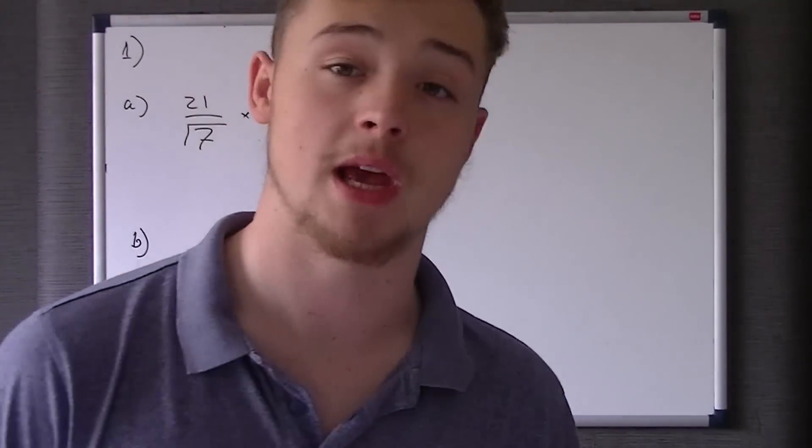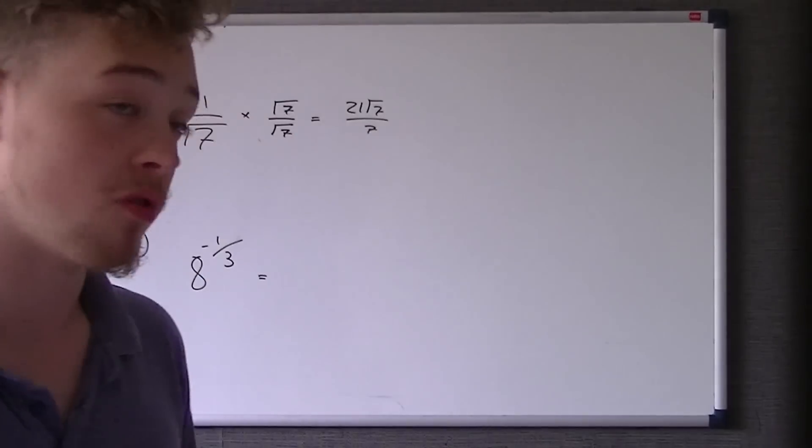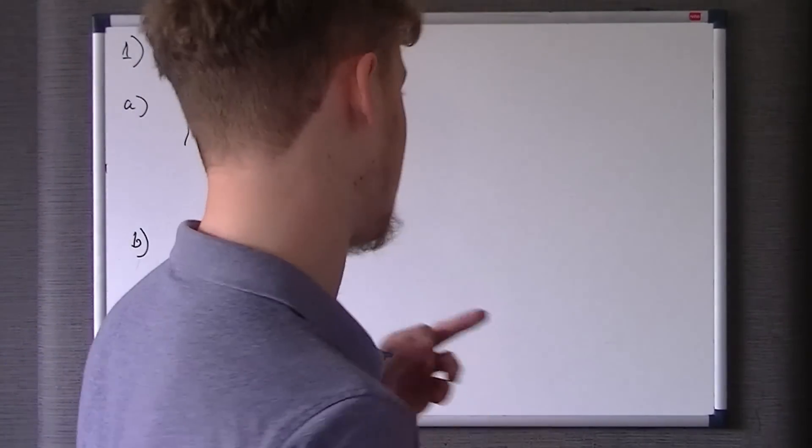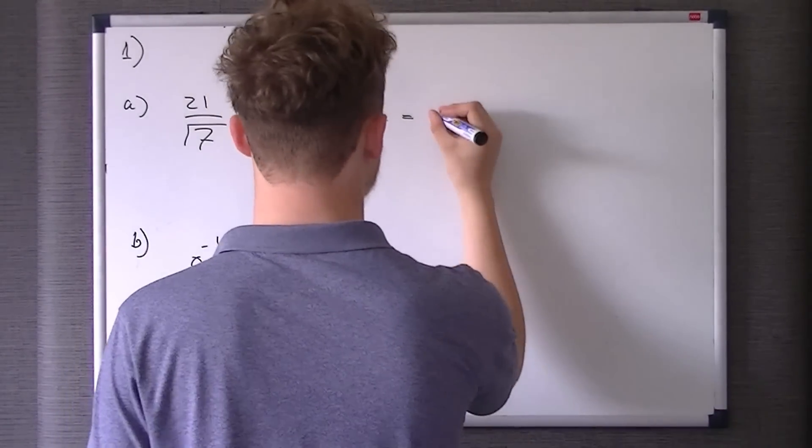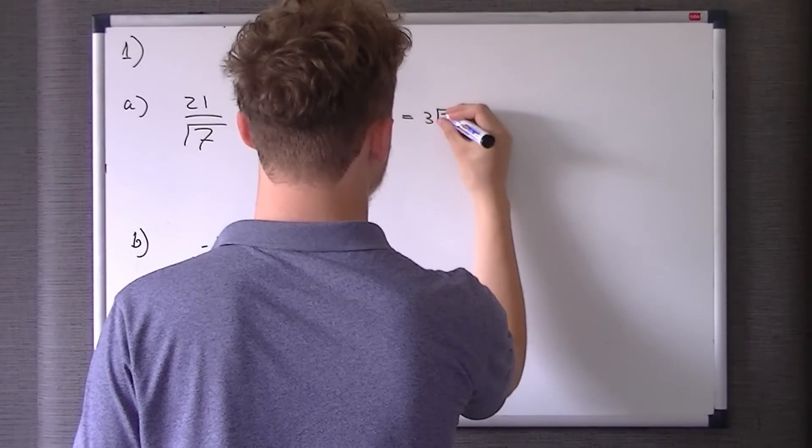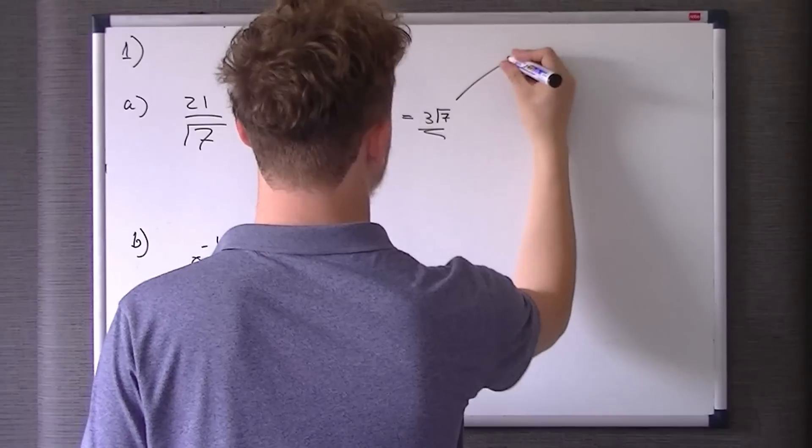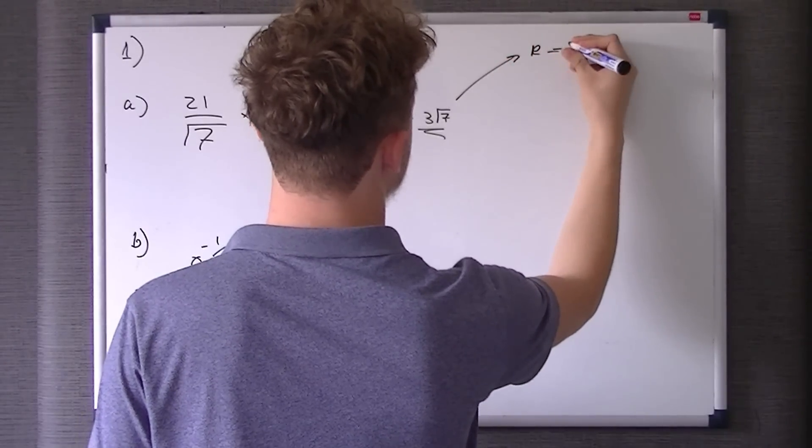However, the key with this, you should spot it anyway, it asks you to give it in the form k root 7, so that's not the end of it. So 21 over 7 is obviously 3, so it's 3 root 7, and therefore k equals 3.